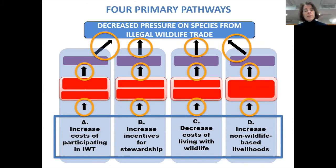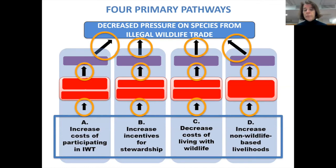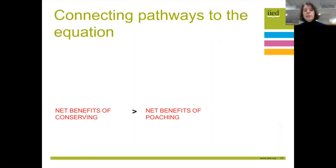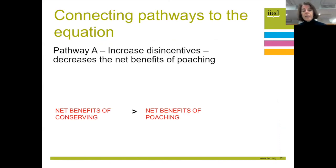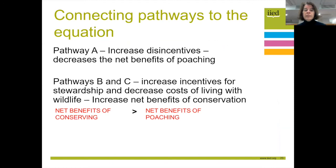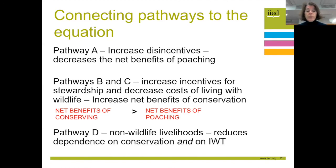Each of these pathways involves progress underpinned by a huge number of assumptions that we need to be aware of and build into programme design. Pathway A links to decreasing the net benefits of poaching. Pathways B and C — increasing incentives for stewardship and decreasing the cost of living with wildlife — link to increasing the net benefits of conserving. Pathway D, supporting non-wildlife livelihoods, reduces overall dependence on both wildlife conservation and illegal wildlife trade.